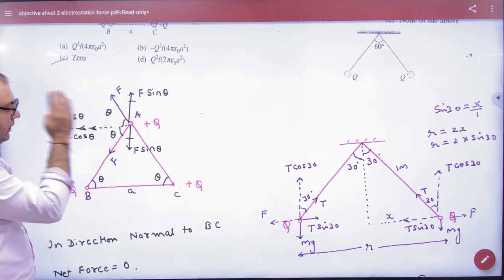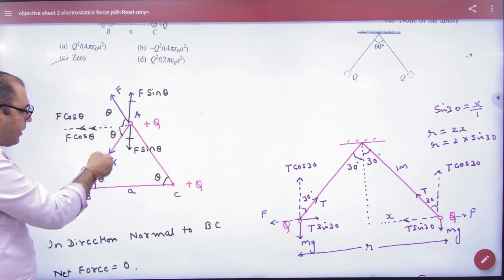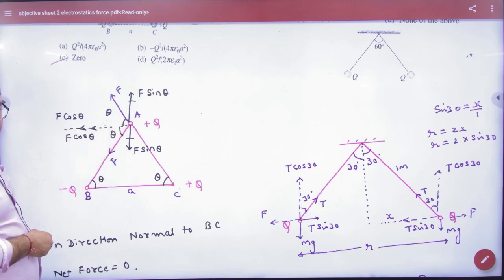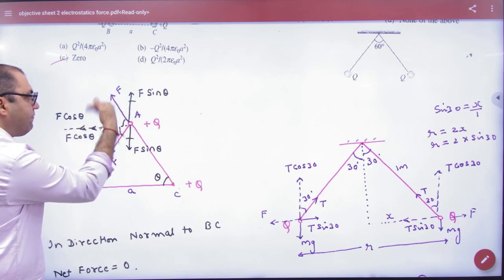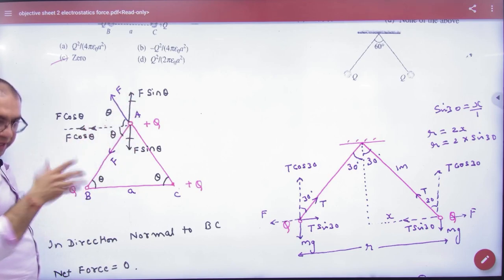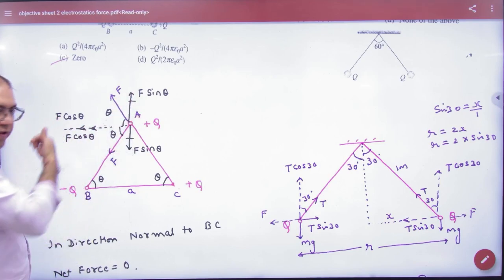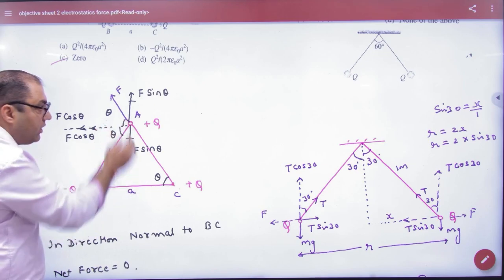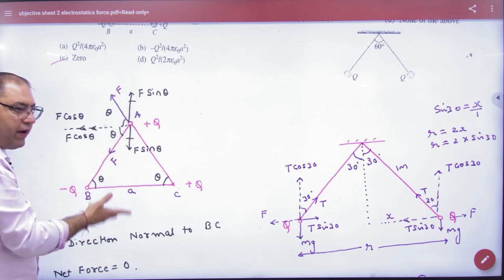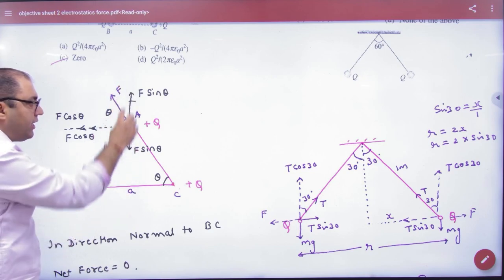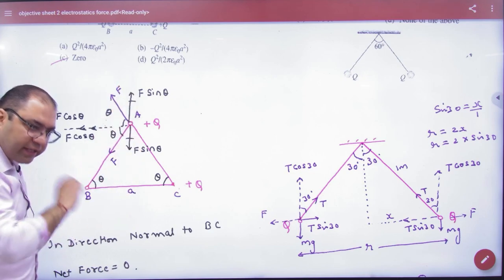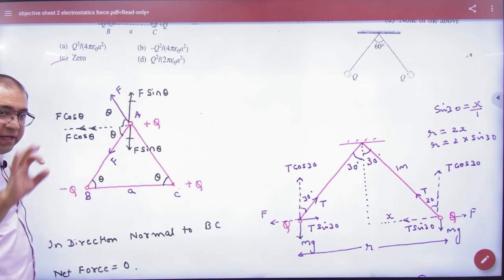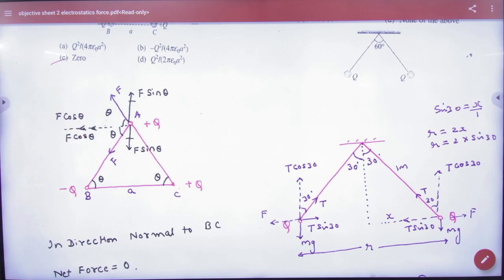These angles are equal because this is a symmetrical diagram. Theta, theta, theta, theta. These two components are F cos theta and F sin theta. F sin and F sin cancel. Net force is 2F cos theta. So, the question asks for the force perpendicular to BC. What is the answer? The answer is zero.